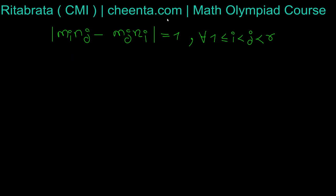Is it possible? If it is possible, then for such a pair, pick any j not equal to i. Say j can be less than or greater than i, it doesn't matter. For any j ≠ i and also j ≠ r, what about the quantity mᵢnⱼ - mⱼnᵢ?